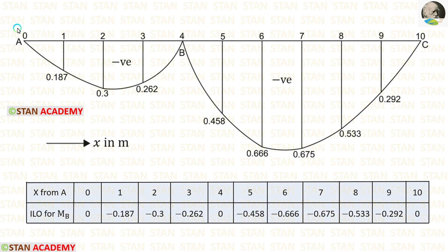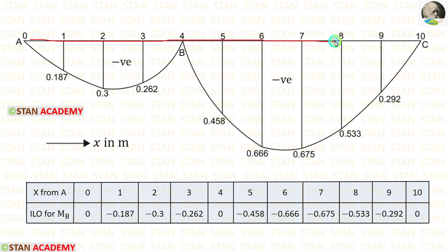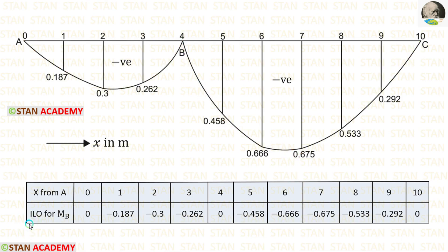Now let us make the influence line diagram. We are getting all values negative, so the diagram will come below the base line. The diagram should be drawn in a curved shape for the ordinates. Thank you for watching this video.